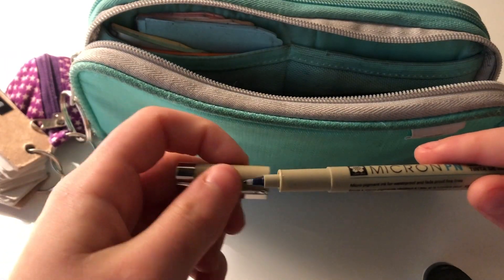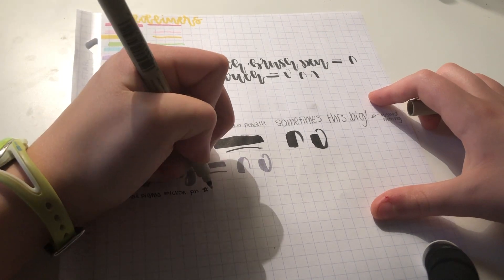This is a Sakura Pigma Micron in my go-to size PN. I usually just use this for my bullet journal.